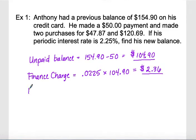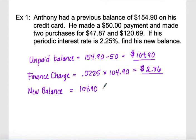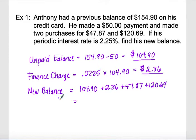Now we calculate the new balance. This new balance formula is just like our previous lesson, but this time we had to calculate the finance charge ourselves. We take our unpaid balance of $104.90, add in the interest of $2.36, and also add in new purchases of $47.87 and $120.69. That gives us a new balance total of $275.82.